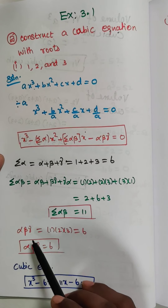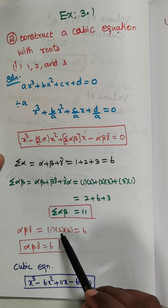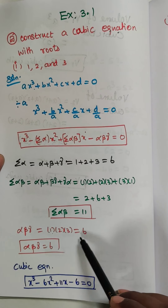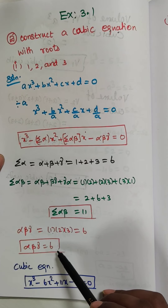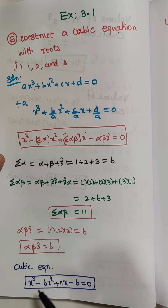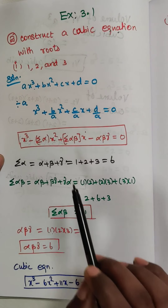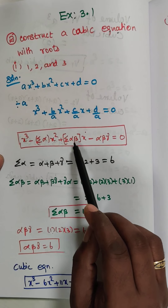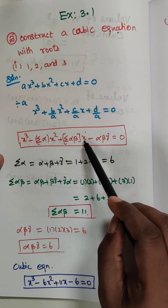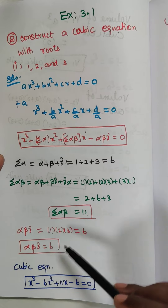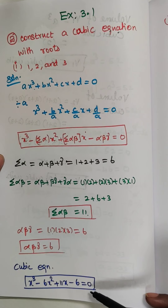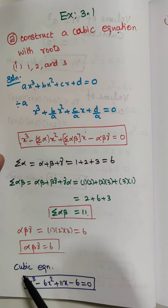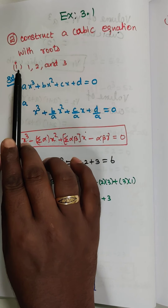Next, αβγ: with α = 1, β = 2, γ = 3, we get 1×2×3 = 6. So αβγ = 6. The cubic equation is: x³ − 6x² + 11x − 6 = 0. This is the cubic equation for the first subdivision.